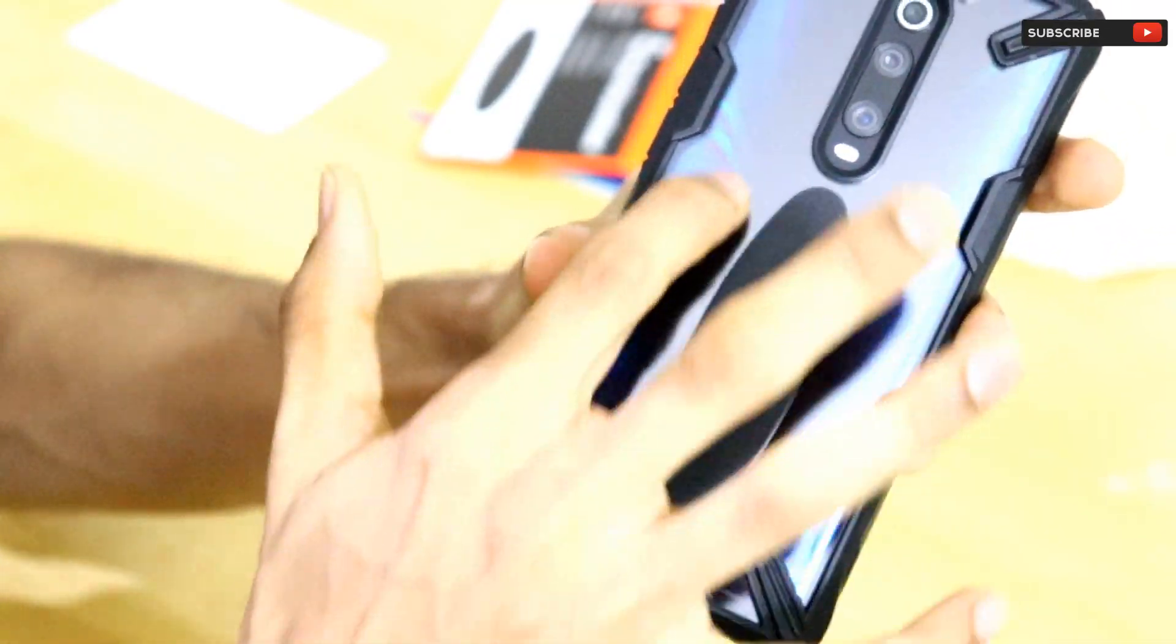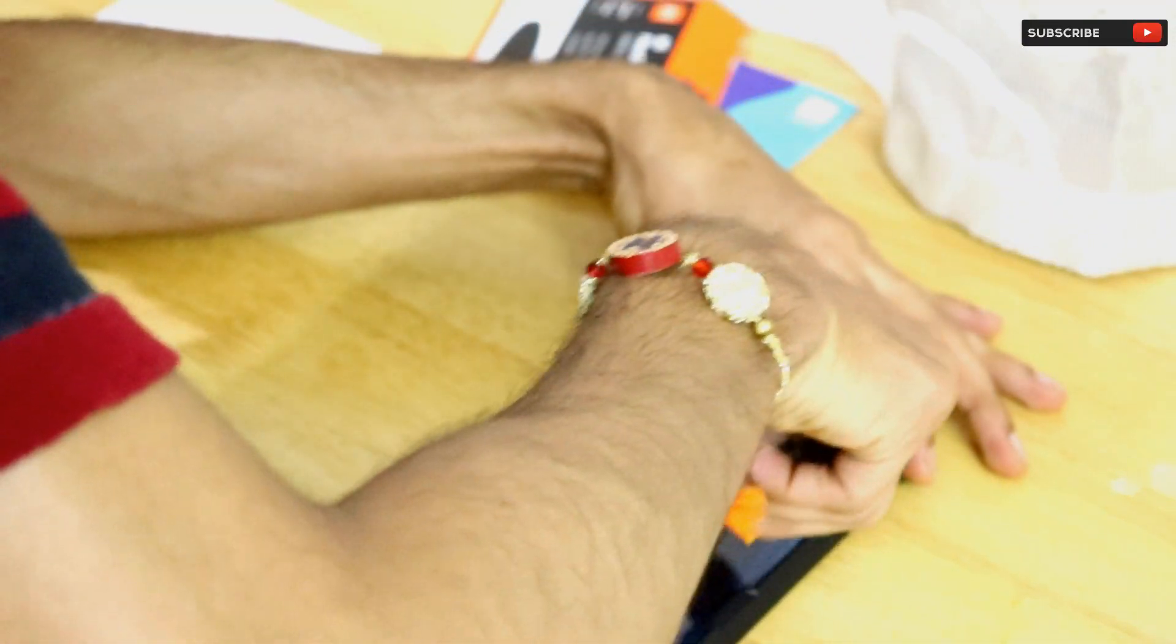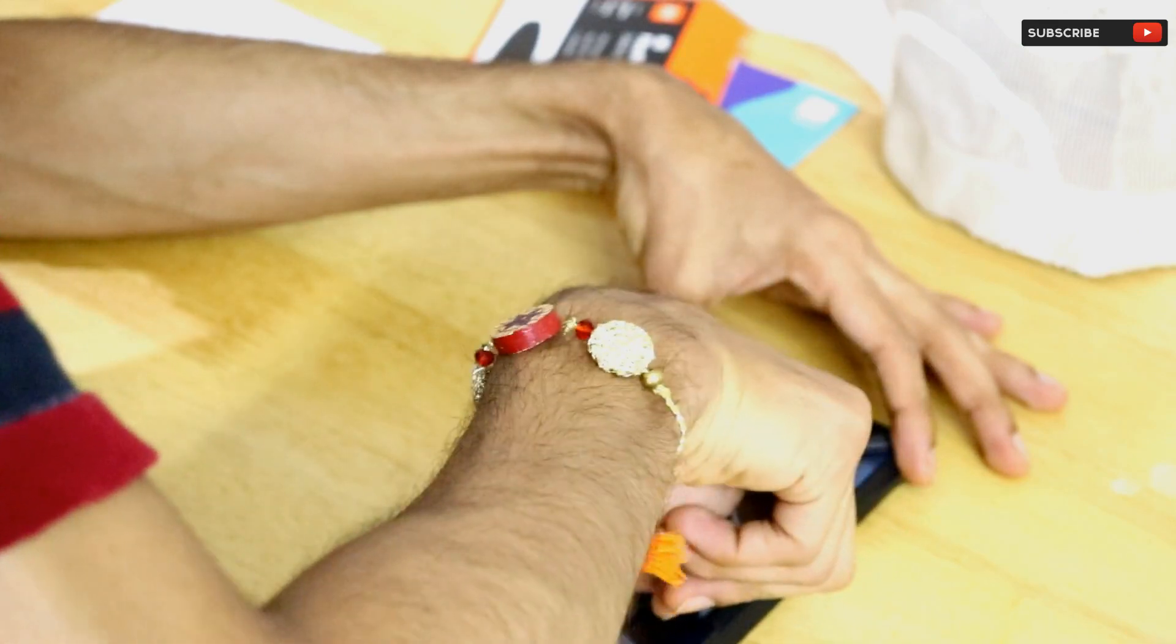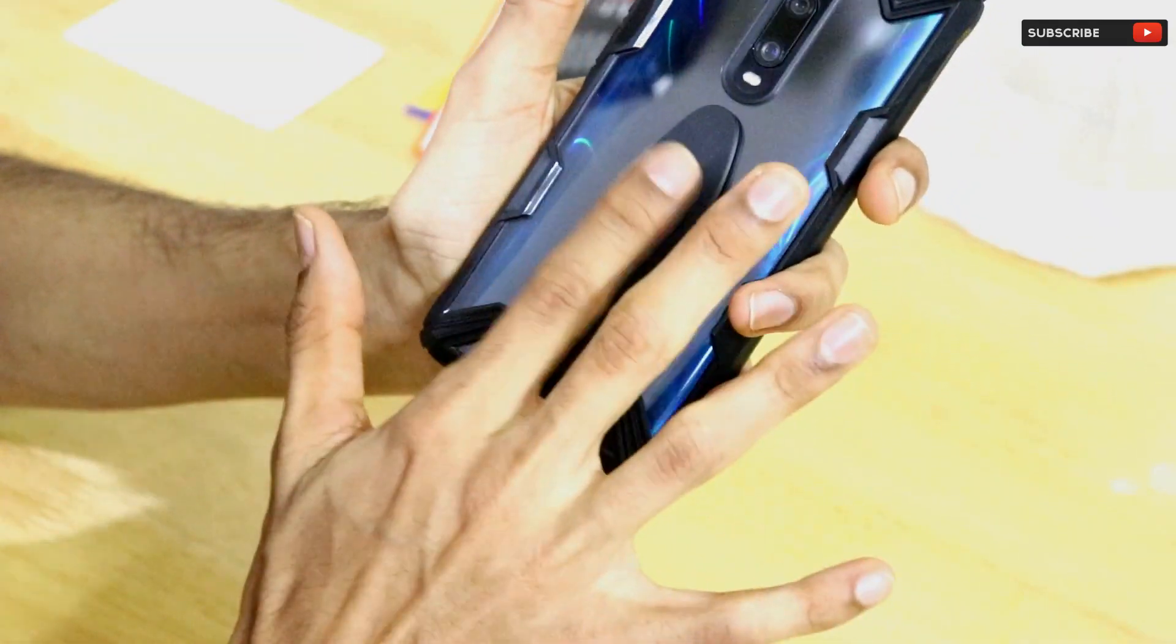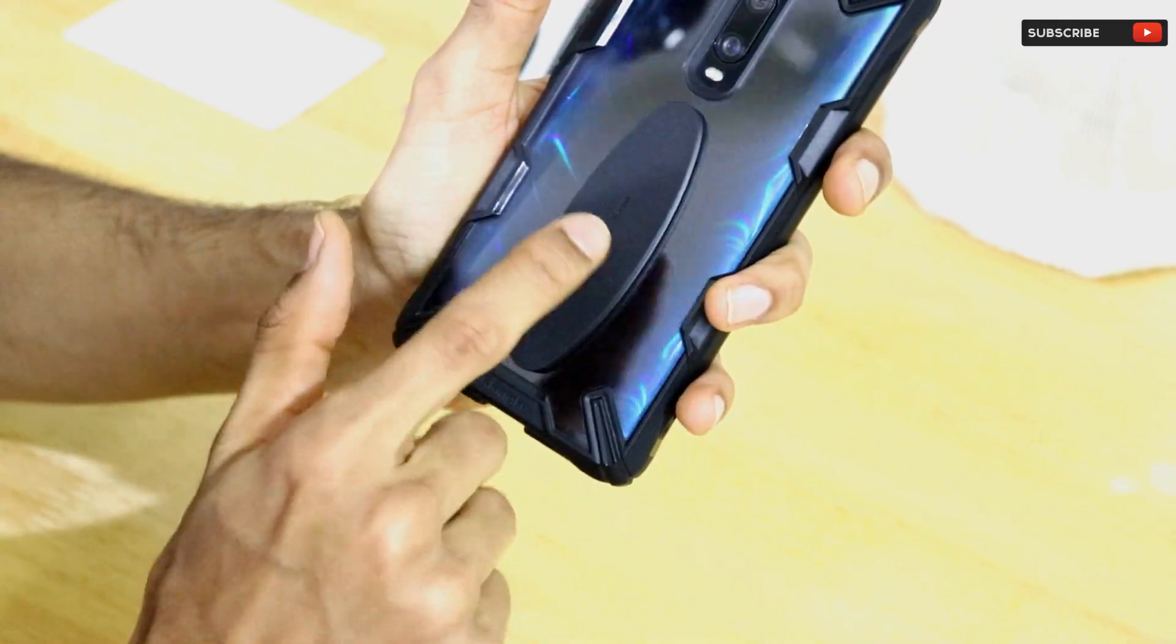After attaching the Mi Flex Grip onto the back surface of your smartphone, make sure you apply some pressure so that the adhesive will be tightly attached. Now what you can do is leave this smartphone aside for 20 minutes so that the adhesive will properly attach to the back surface.